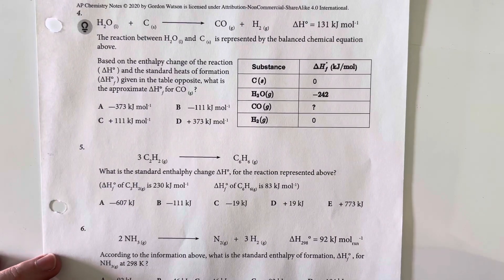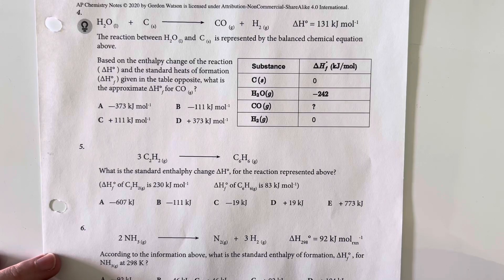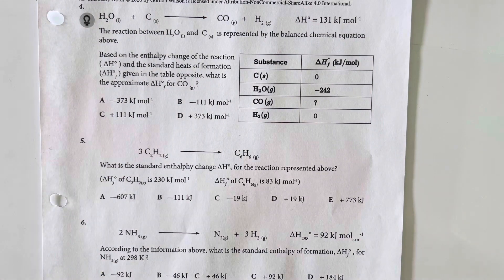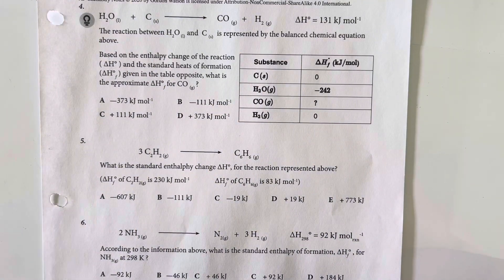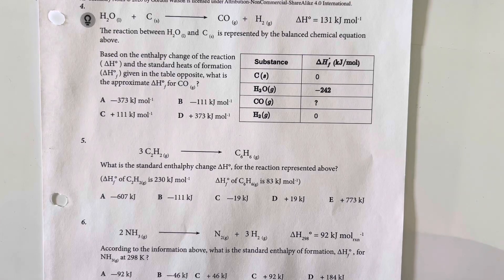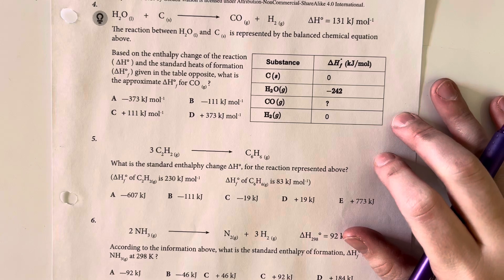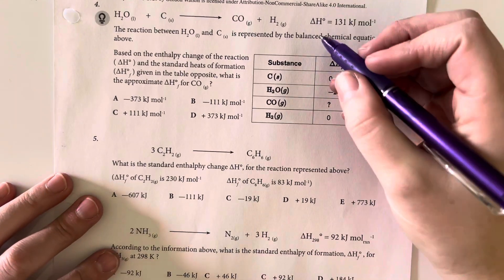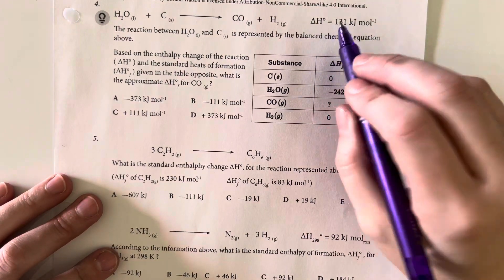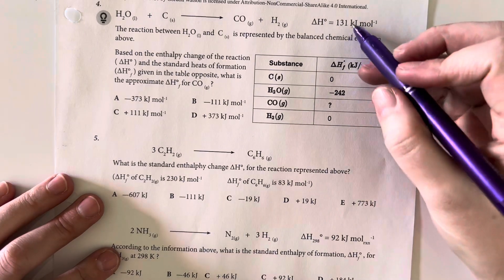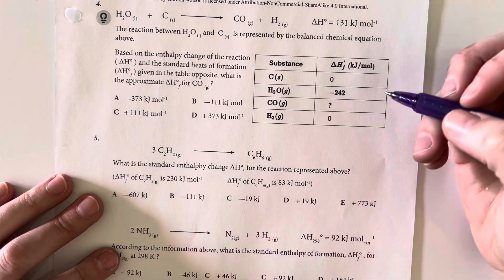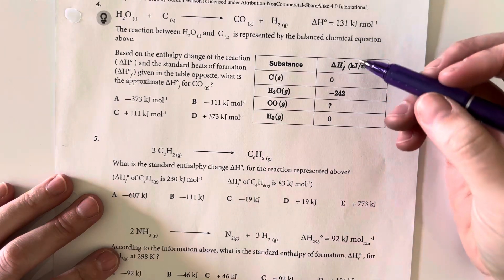The reaction between water and carbon is represented in the balanced chemical equation above. Based on the enthalpy change of the reaction and the standard heats of formation given in the table, what is the approximate heat of formation for carbon monoxide? The total delta H is going to be positive 131, and we know that we have products minus reactants.